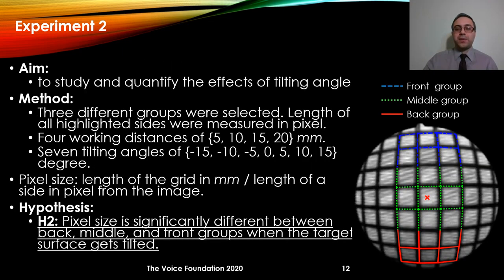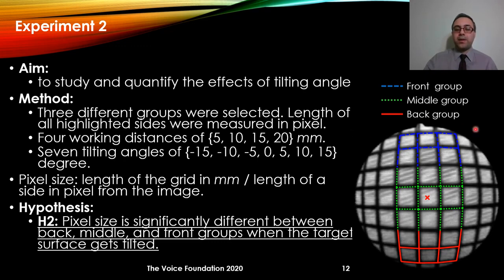In the second experiment, we wanted to study and quantify the effect of tilting angle. Now there are three groups: groups at the center, groups corresponding to the front of the setup, and groups corresponding to the back of the setup. The working distances were again 5, 10, 15, and 20 millimeters, and now we had seven different tilting angles. We computed the value of pixel size, and the hypothesis was that pixel size is significantly different between back, middle, and front groups when the target surface gets tilted.